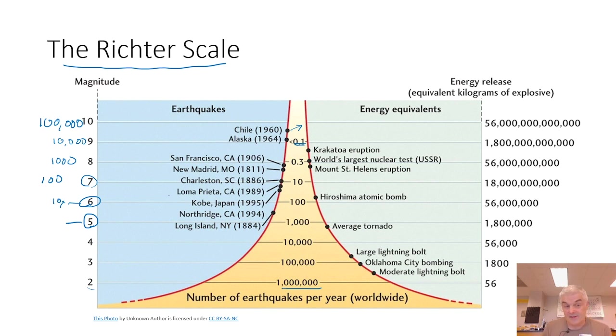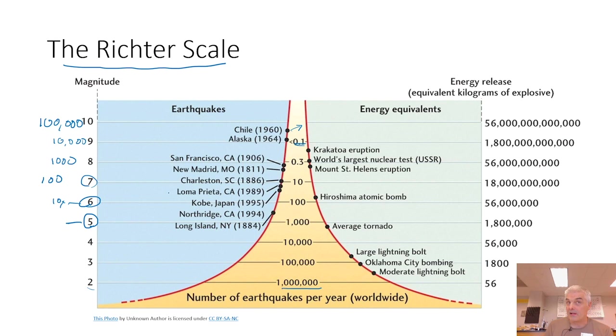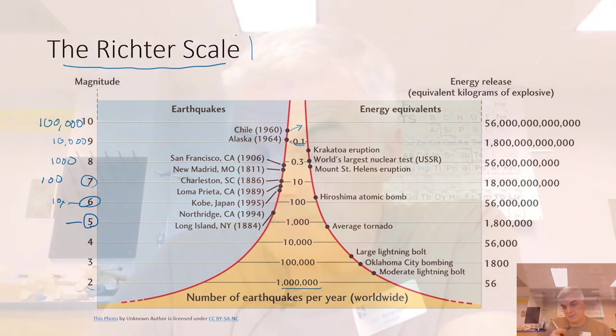They go up by a factor of ten for each number. So the difference between a five and a six is a lot, and the difference between an eight and a nine is enormous. When you see 5.1 versus 5.9, 5.9 is a lot worse than 5.1 because it's a logarithmic scale. So Houston, these are the things that cause earthquakes, and some of them can be absolutely devastating. We'll see you in class.